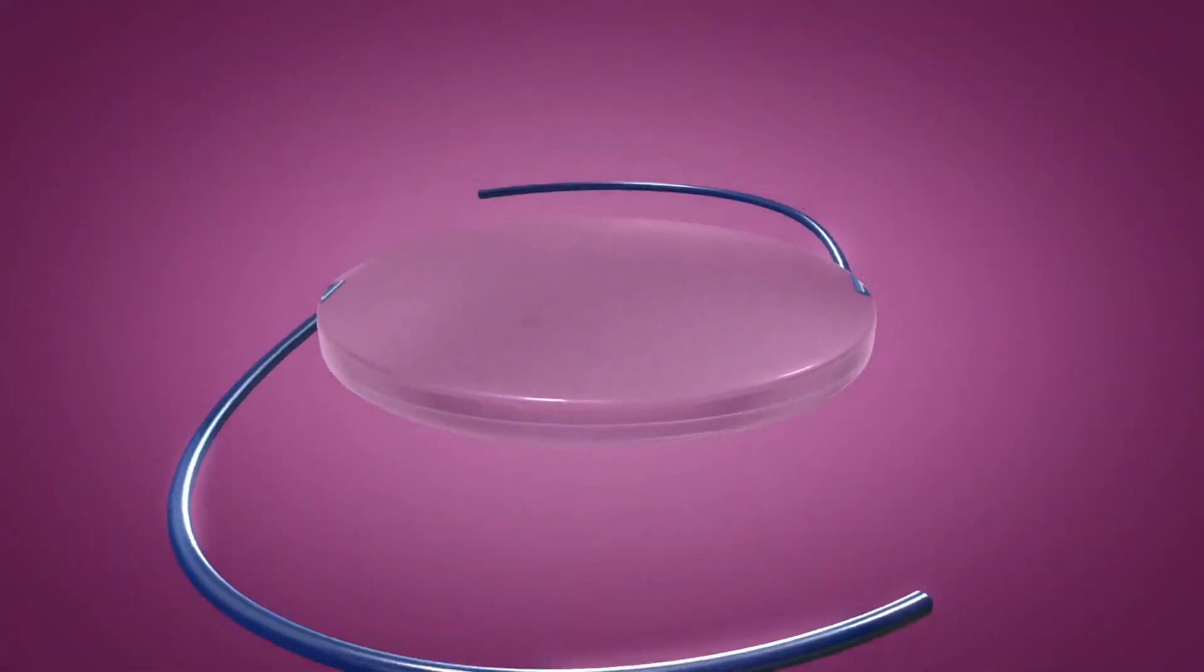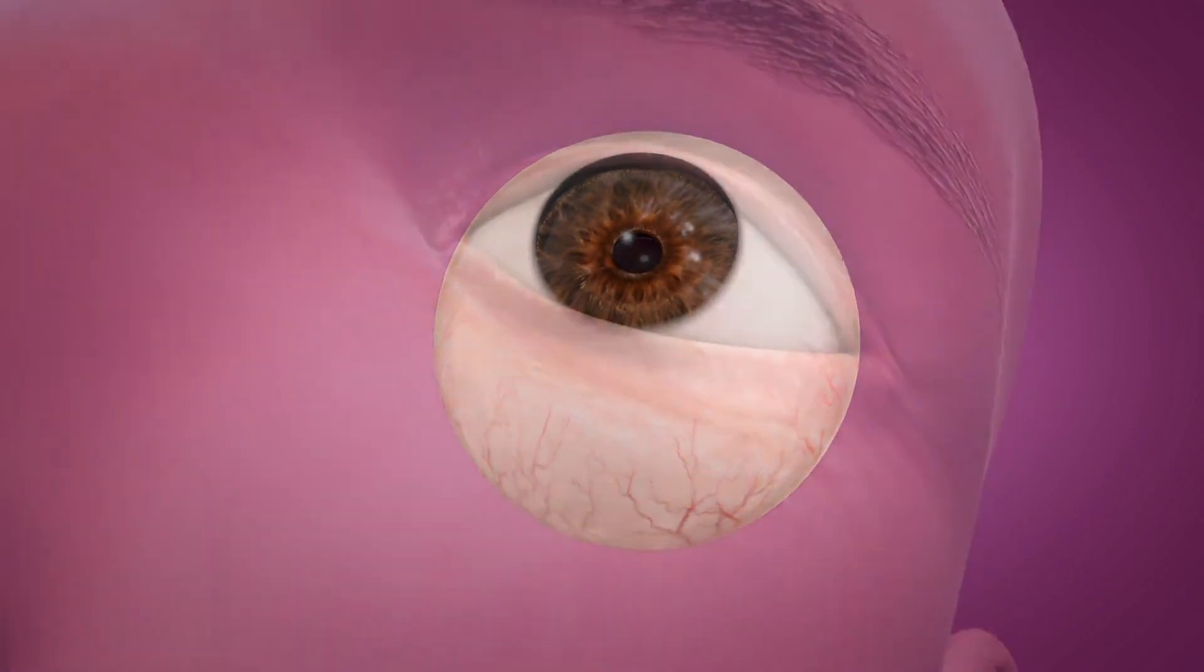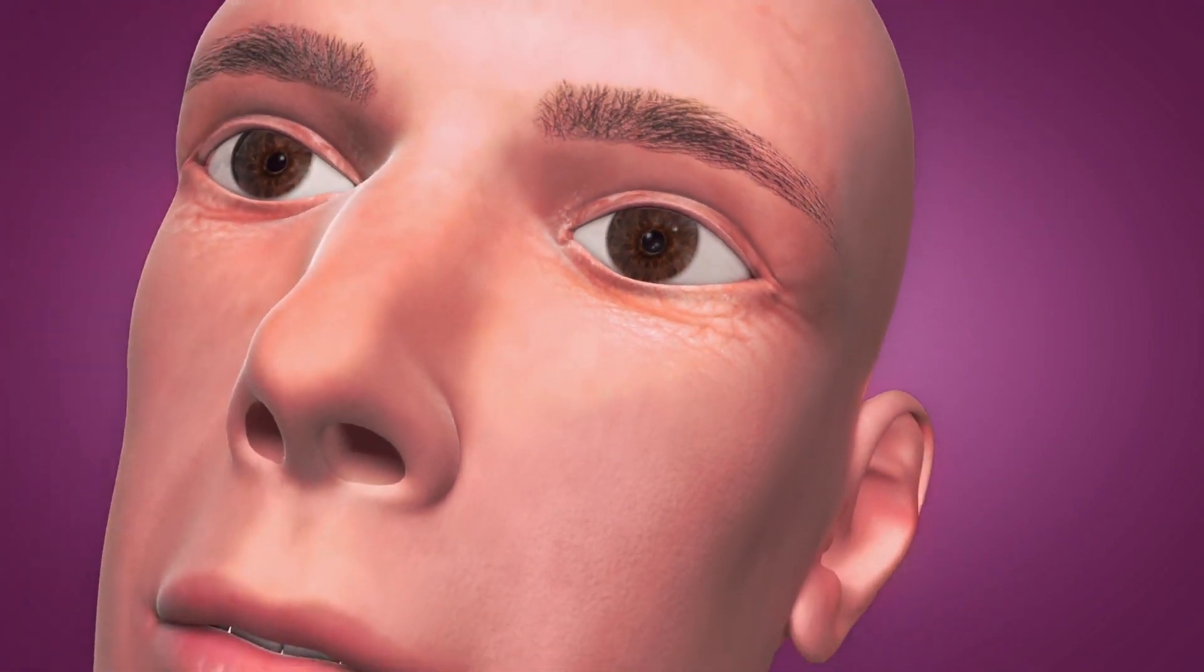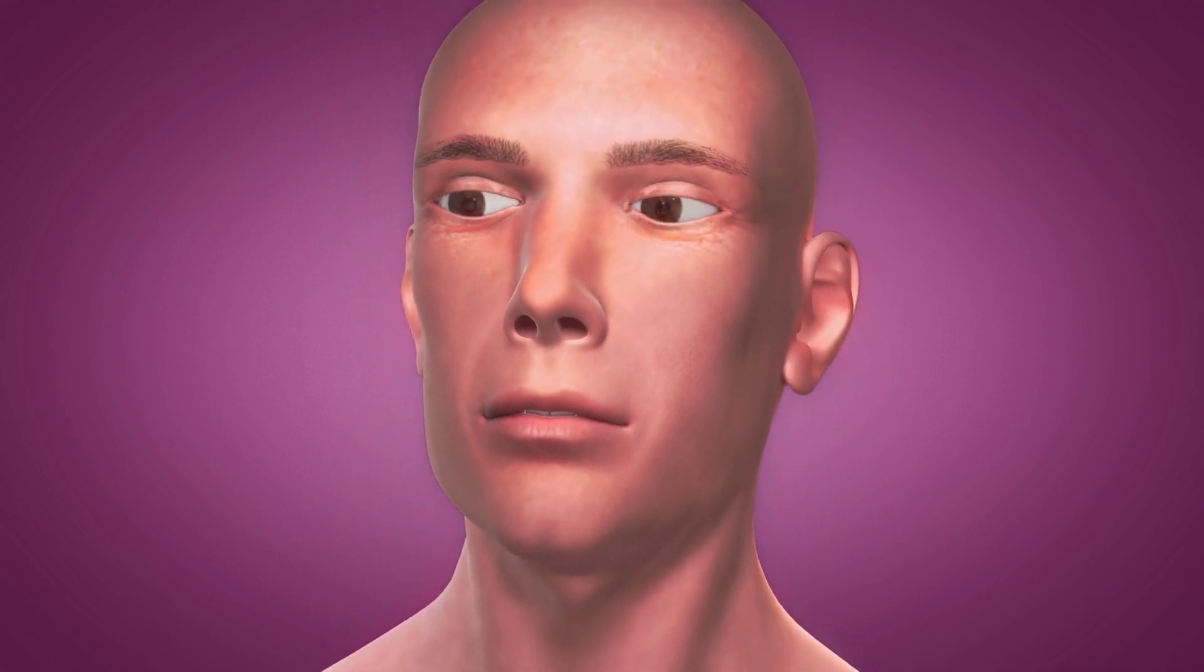RxCite's Light Adjustable Lens enables cataract surgeons to precisely reshape the lens based on the exact amount of visual correction and optimization needed to achieve the desired vision after cataract surgery.